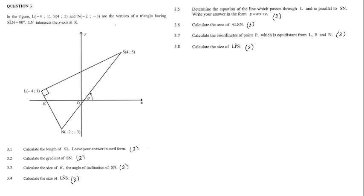Hi guys, today we're going to be looking at an analytical geometry question. In the figure, L being negative 4 and 1, S being 4 and 5, and N being negative 2 and negative 3, are the vertices of a triangle having SLN equal 90 degrees. LN intersects the x-axis at k.